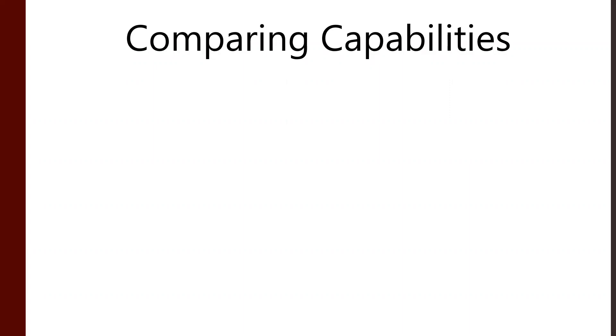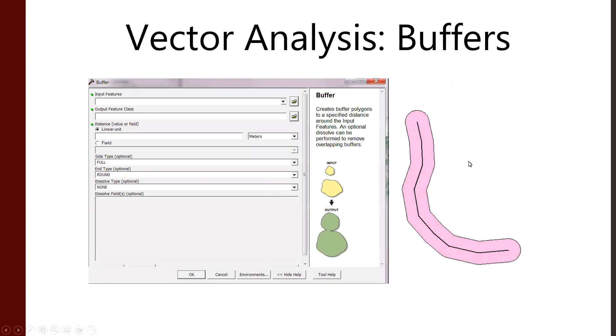Now, raster data is in some ways more used in environmental modeling. Any kind of satellite image or topographic data is likely raster data. So I think you could start either place. We start with vector. Then we move into raster. So it's useful to compare things that are going on.